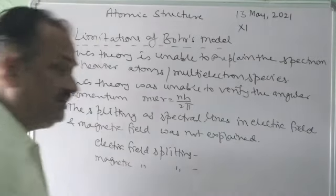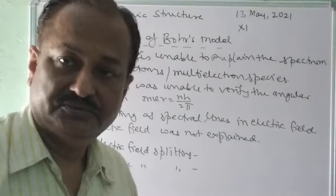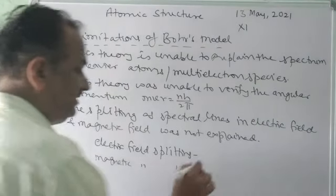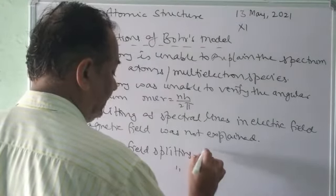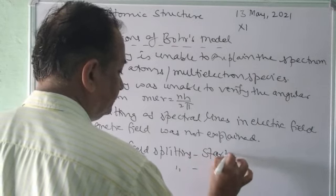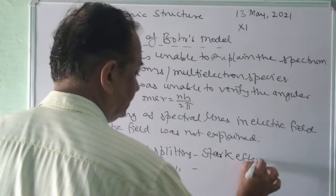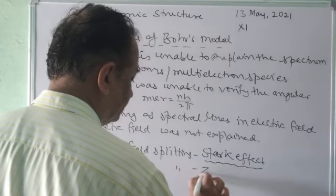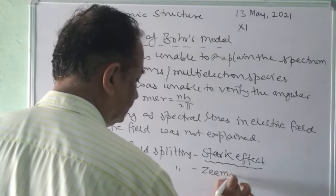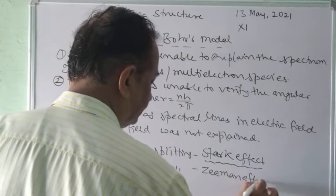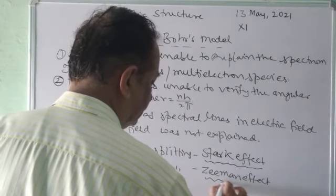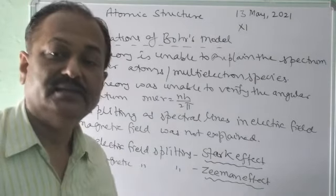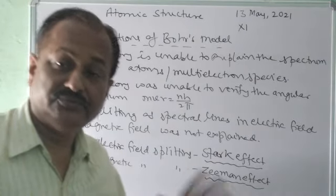The splitting by electric field is called the Stark effect, and the splitting by magnetic field is called the Zeeman effect. Stark and Zeeman are the names of scientists who first studied this splitting, and so it has been named after them. These effects were not explained by Bohr.